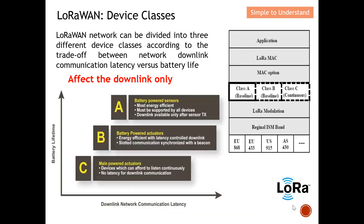Let's quickly discuss the different device classes of LoRaWAN. The LoRaWAN network can be divided into three different device classes: Class A, Class B, and Class C. I'd like to emphasize this again — all these different device classes only affect the downlink. The uplink is business as usual, meaning when the end device has a message to send to the gateway, it will still send the message normally. The different device classes only affect the downlink, not the uplink.